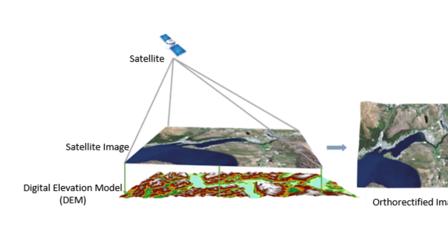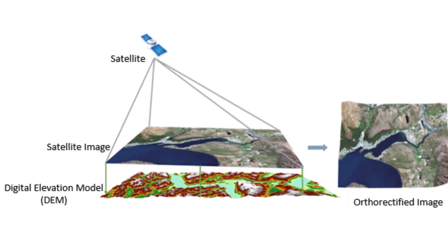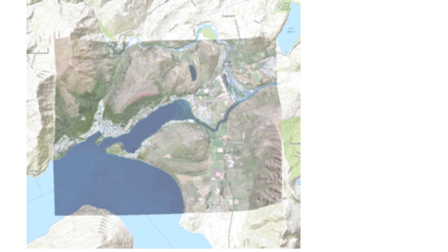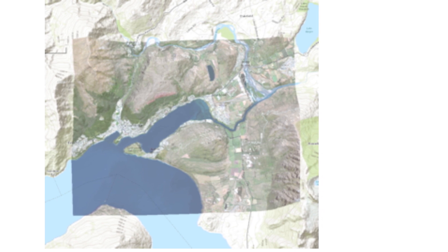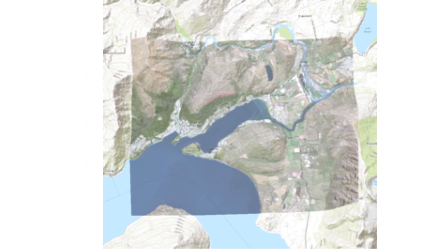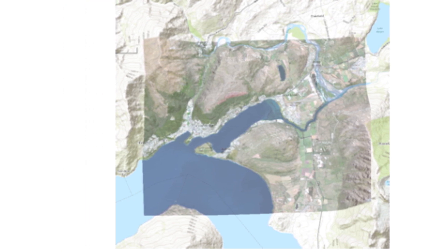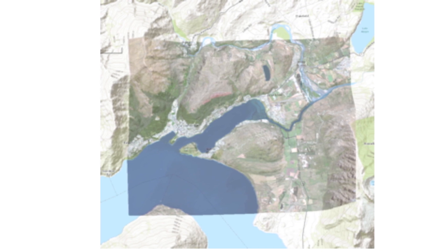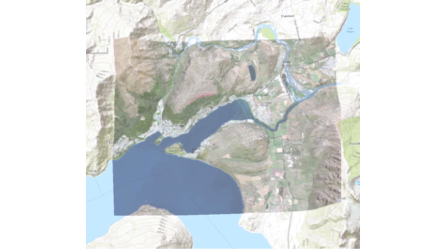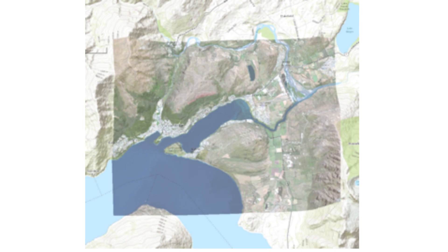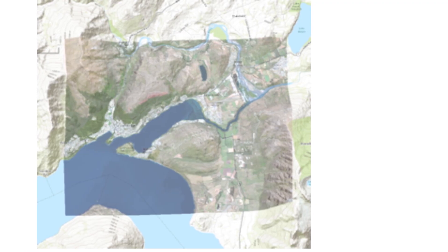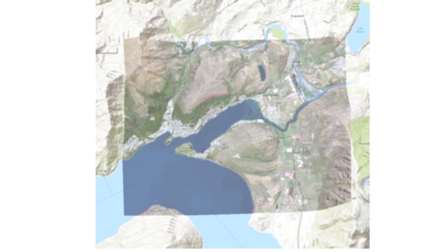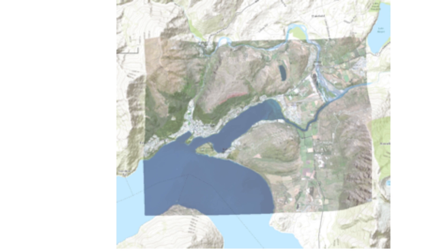Distortions arising from topographic relief can be analytically rectified and the objects in the image and the real world have equal dimensions. The resulting orthorectified image accurately represents features on the ground, just like a map. Orthorectified imagery, also known as orthoimagery, is precisely registered to a ground coordinate system.